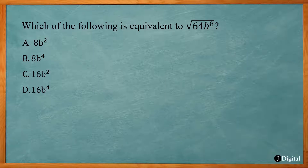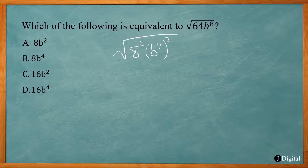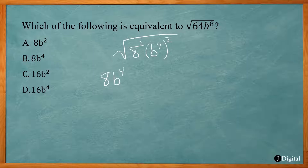This problem asks which of the following is equivalent to the square root of 64b to the 8th power. When finding the square root, we look for things raised to the second power. 64 is a perfect square — it's 8 squared. We can rewrite b to the 8th as b to the 4th, squared, since 2 times 4 gives you 8. The square root of 8 squared is just 8, and the square root of (b⁴)² is b to the 4th. So the answer is 8b⁴, which is answer B.